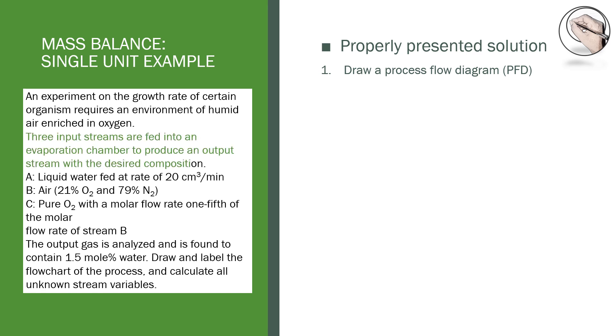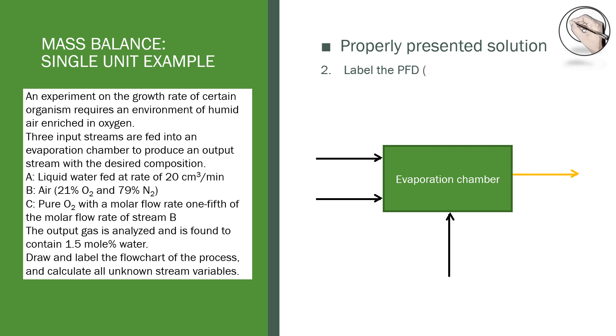In this example we are told that the process unit is an evaporation chamber with three input streams and one output stream. So we draw a box to represent the chamber and we label it. You must add arrows going into the box to represent the input streams and an arrow leaving the box for the output stream. This diagram is called a PFD.